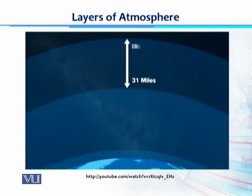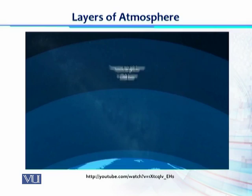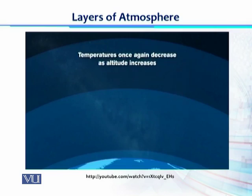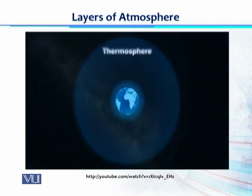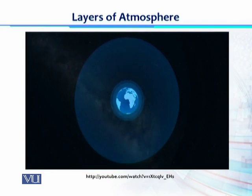The next layer is called the mesosphere, which extends from 31 miles to 53 miles above the surface of the Earth. This layer is where most meteors burn up in the atmosphere. Temperatures once again decrease as altitude increases, similar to what happens in the troposphere.